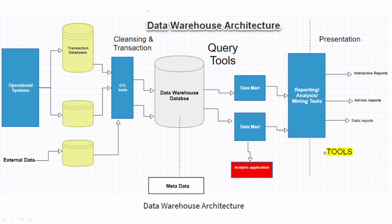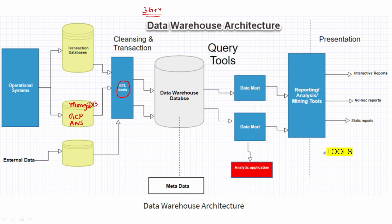Next is the Data Warehouse Architecture — it is a 3-tier architecture. On the left side is the operational system. A software company runs normal operations with a database: cloud database like Google Cloud, AWS, and MongoDB are transaction databases. ETL tools — Extract, Transform, Load — are used. There is also external data, which is additional open-source data that is extracted, transformed, and loaded.